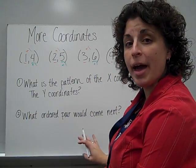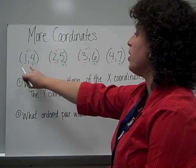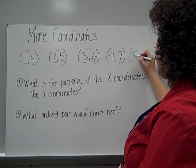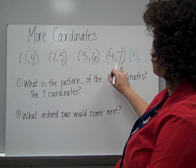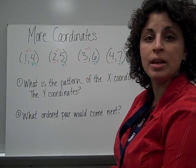Now I'm going to use these patterns that I found to find the next ordered pair. Well, I'm looking at the x's, 1, 2, 3, 4. Well, next would be 5. 5 what? 4, 5, 6, 7, 8. So my next ordered pair would be 5, 8.